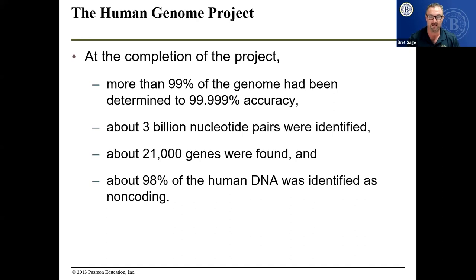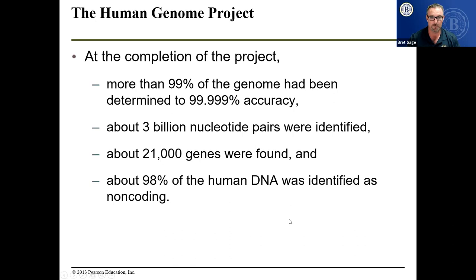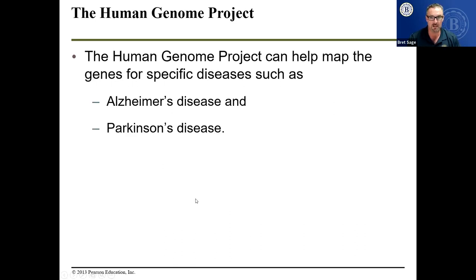23andMe has merged with Ancestry.com. If you send in a sample, they check all your genes and tell you where your family came from. They can also tell you if you're likely to get Alzheimer's or Parkinson's in old age. The Human Genome Project can map genes for specific diseases such as Alzheimer's and Parkinson's. Shown here are Muhammad Ali and Michael J. Fox, both who suffered from Parkinson's — Muhammad Ali has since passed away and Michael J. Fox is still battling the disease.